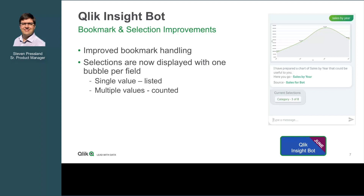Bookmark handling has been improved, allowing us to manage bookmarks with an increased number of selections within them. Across the board — and particularly relevant for bookmarks — we're now displaying selections as one bubble per field. If you have a single value it will specify the value selected, but as soon as you have multiple values, rather than introducing multiple bubbles per value, we now list the count per field. This reduces the space taken up by selections in your responses and gives you a much cleaner way of asking questions and getting results.